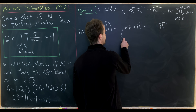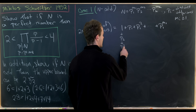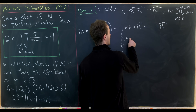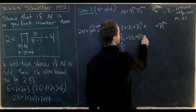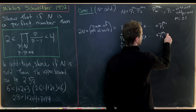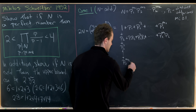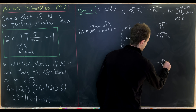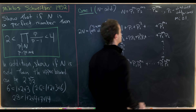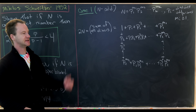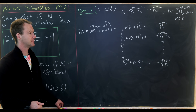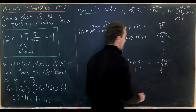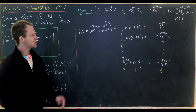Down another column we add everything involving p2: 1 plus p2 plus p2 squared up to p2 to the m2. Filling in the middle, we get p1 times p2, p1 squared times p2, up to p1 to the m1 times p2, and similarly p1 times p2 to the m2 up to p1 to the m1 times p2 to the m2. This focuses on everything with factors containing p1 and p2, and it extends easily to all k primes. To each column we can apply the formula for the sum of a finite geometric series.